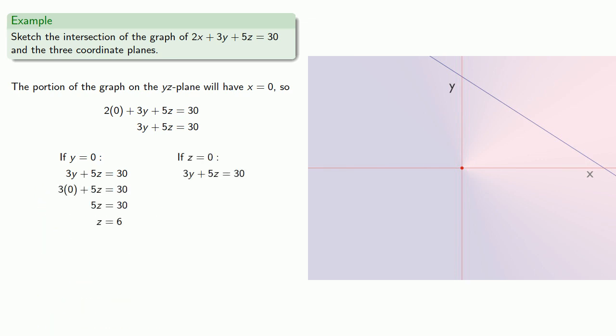And if z equals zero, we get y equals 10. And so we go through the points x equals zero, y equals zero, z equals six, and x equals zero, y equals ten, z equals zero.